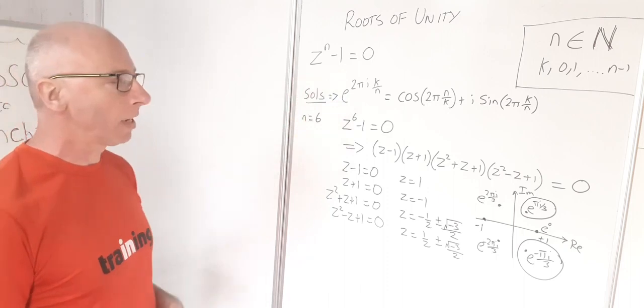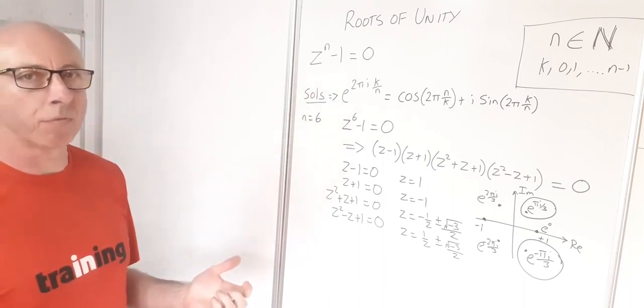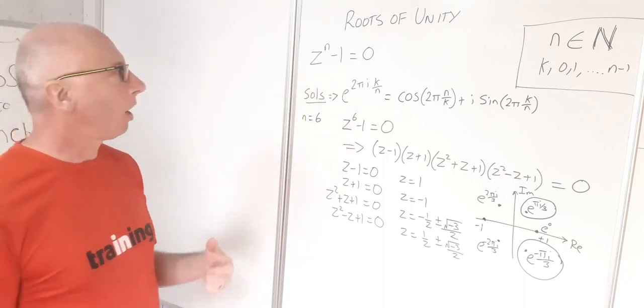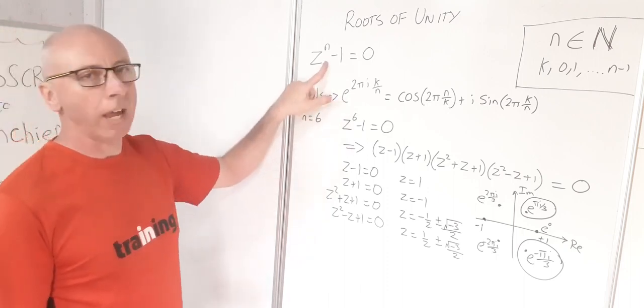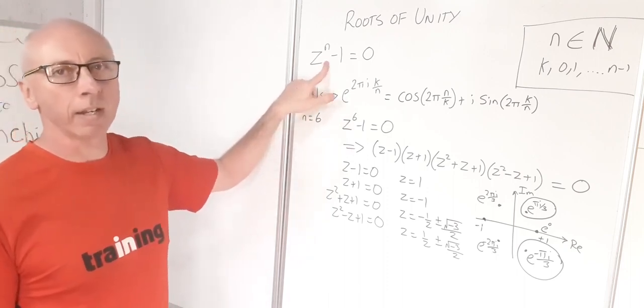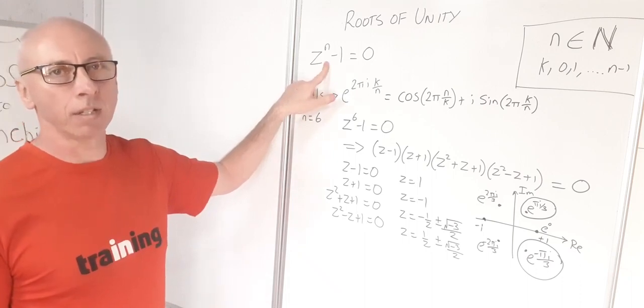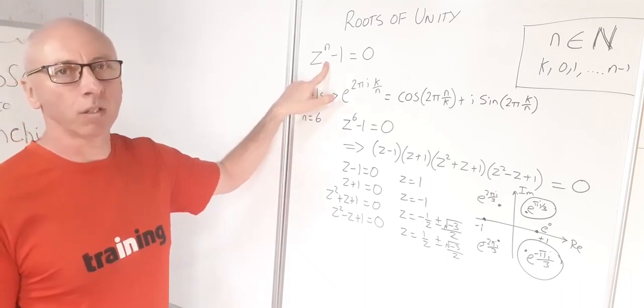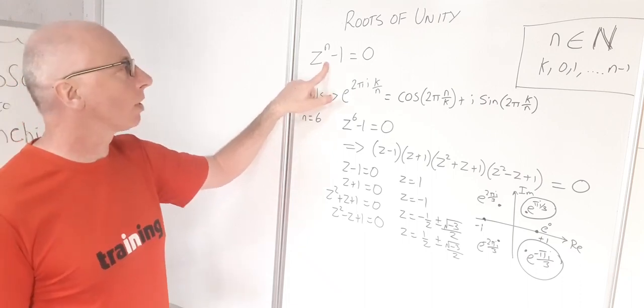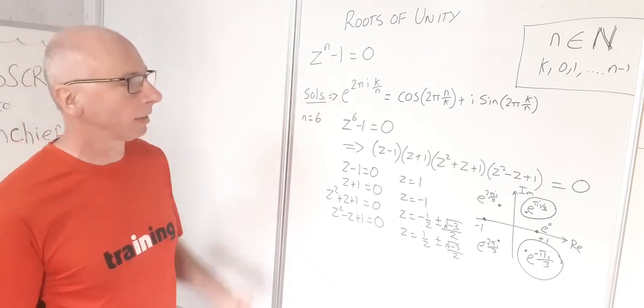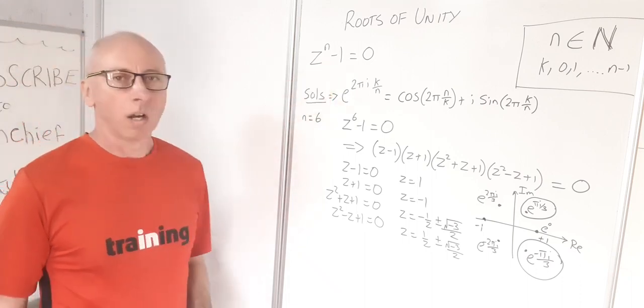In the next video, we'll look at primitive roots of unity for n equals 17, 15, 12, and similar values.